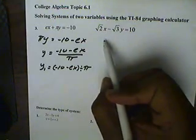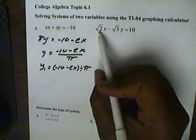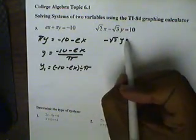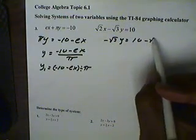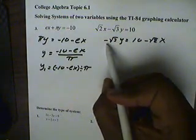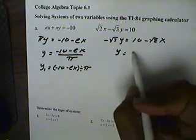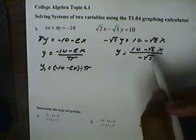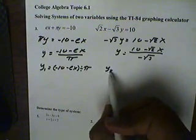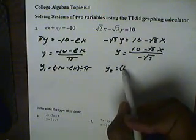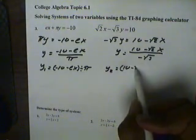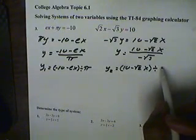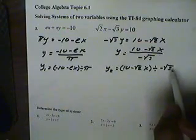For this side right here, when we solve for y, we're going to solve for y by bringing the square root of 2x to the other side, so we'll have negative square root of 3y equals 10 minus the square root of 2x. And then we'll divide by negative square root of 3, and we'll get y equals 10 minus the square root of 2x all over negative square root of 3. When we put this into the calculator, we'll put it in as y2. We'll open up a parentheses for the numerator, type in 10 minus the square root of 2, then x. We'll close the parentheses, hit the division symbol, type in the negative, and then the square root of 3.